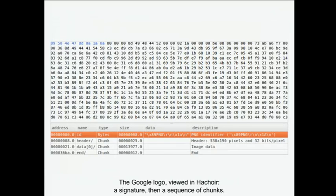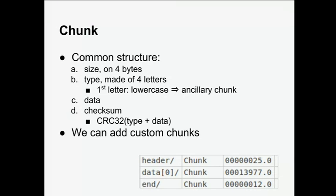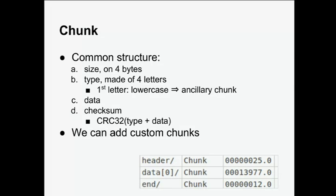Let's take a real example you may have seen before and use a tool called hachoir — which means 'meat grinder,' a tool for computer butchers. That's what hachoir looks like on the Google logo PNG file. You have a signature and a series of three chunks. The chunks at a high level have the same structure, but three different types. The signature is at offset zero and is crafted to say 'it's a PNG' and also to detect standard transfer errors — if transferred as text or ASCII, you can determine that from the signature.